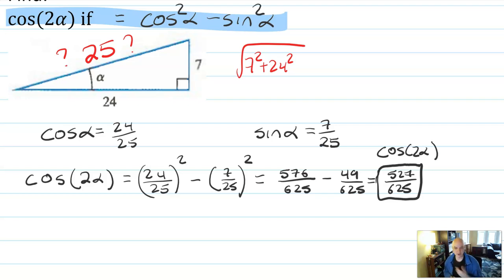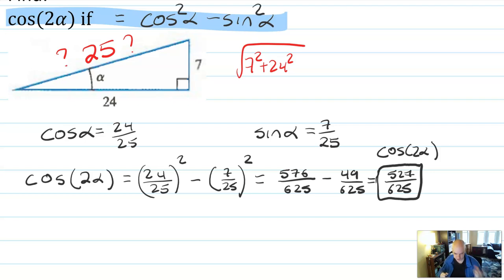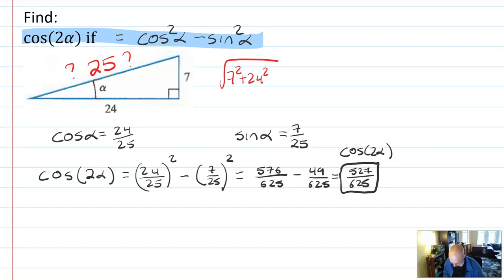I checked and that fraction does not reduce at all — it's always good to check with a big fraction. So the answer is 527 over 625. Leave it as a fraction. You're not finding alpha or 2 alpha; you're using the identity based on what you know from the triangle.